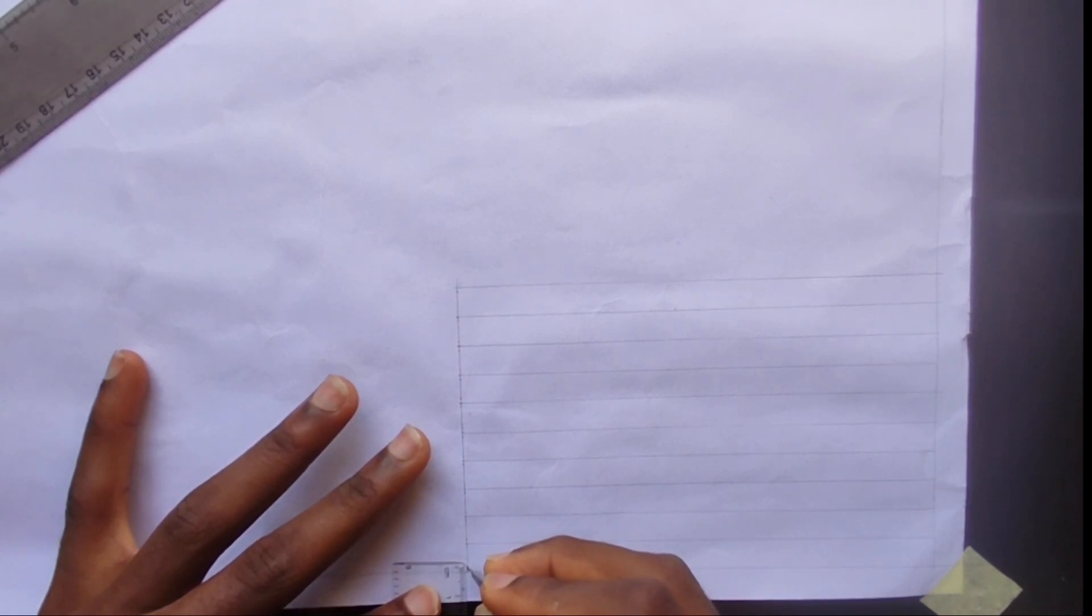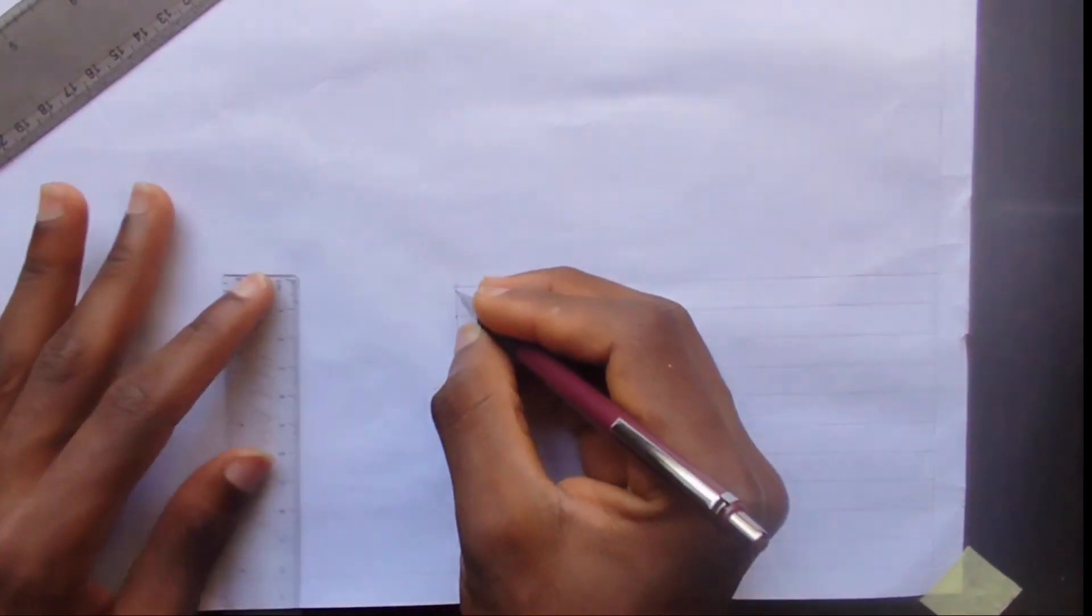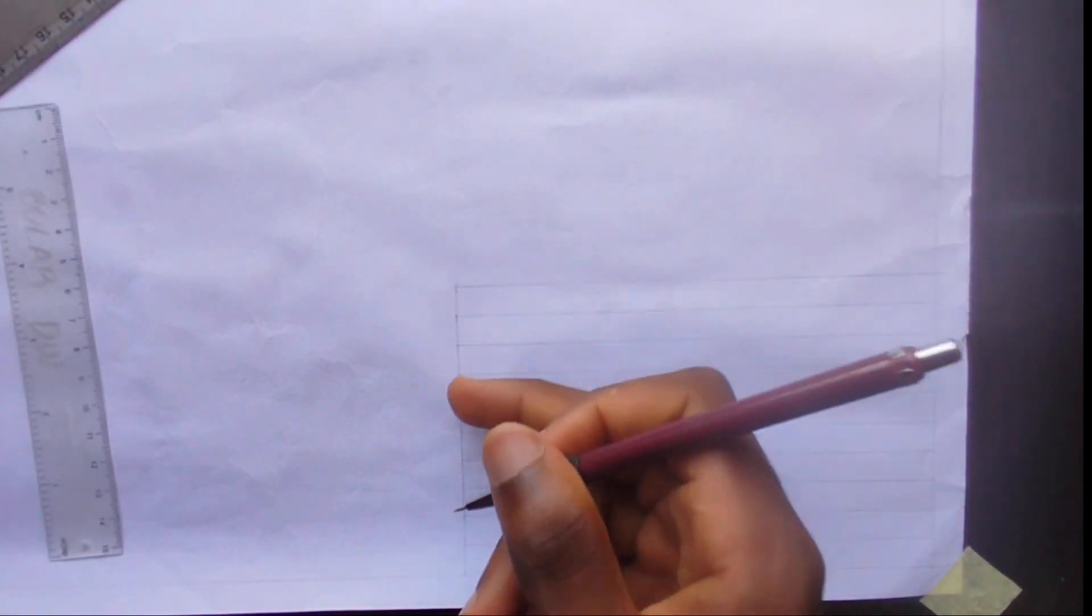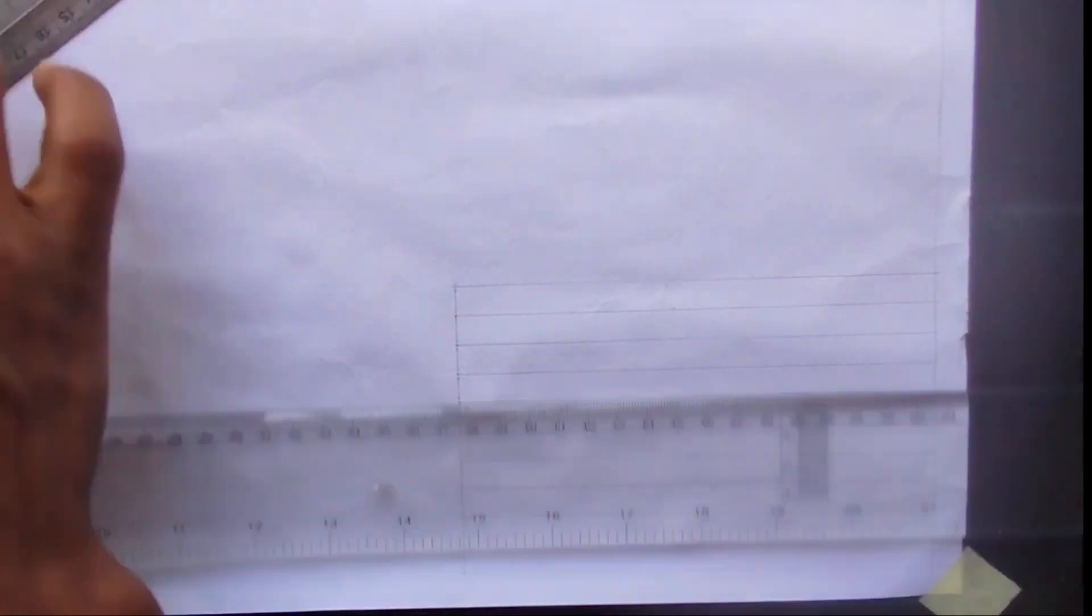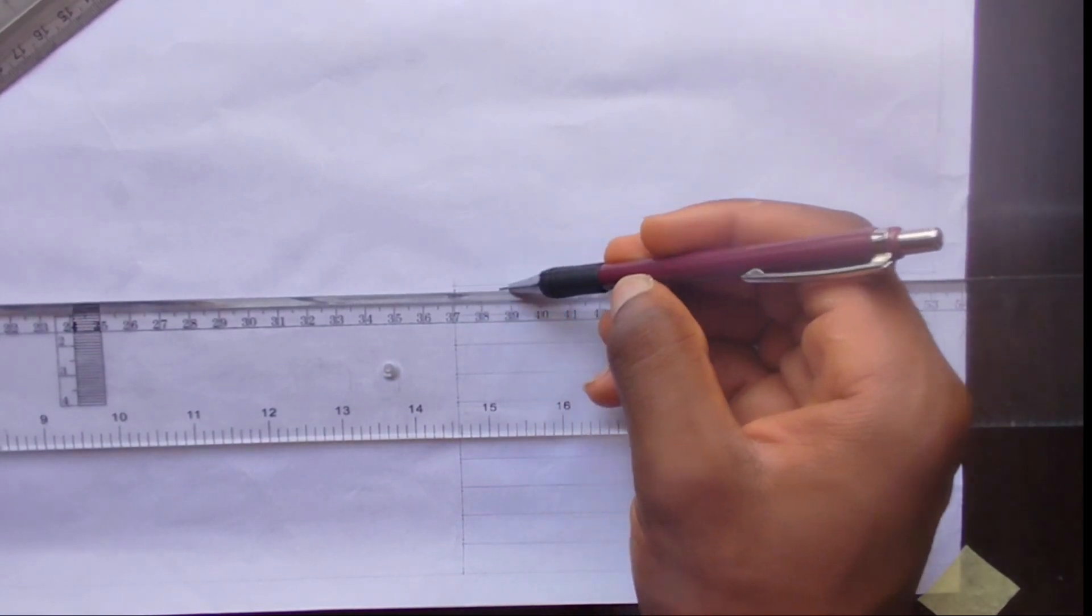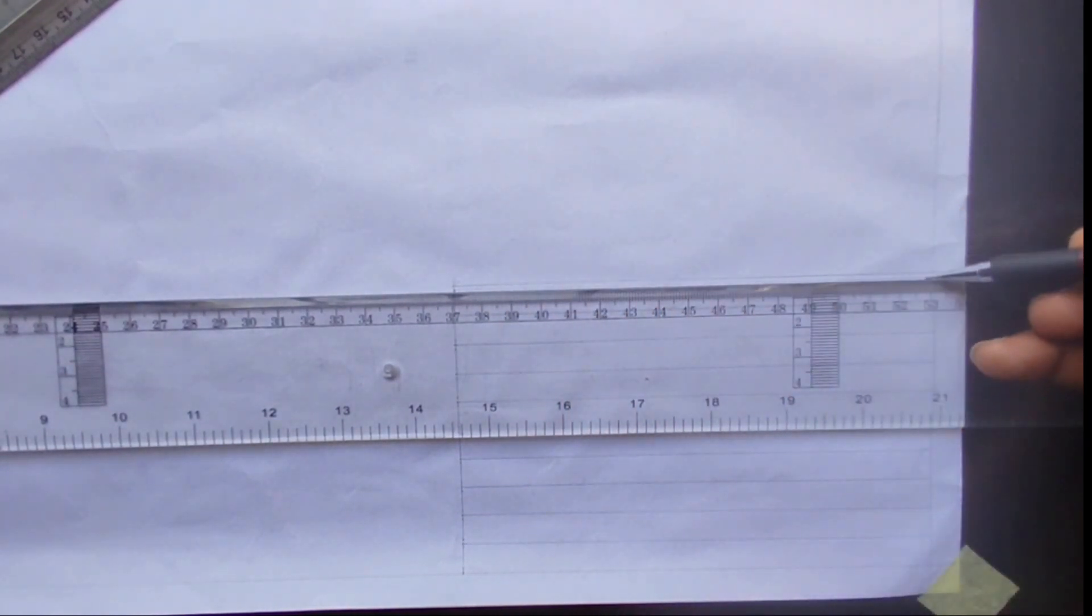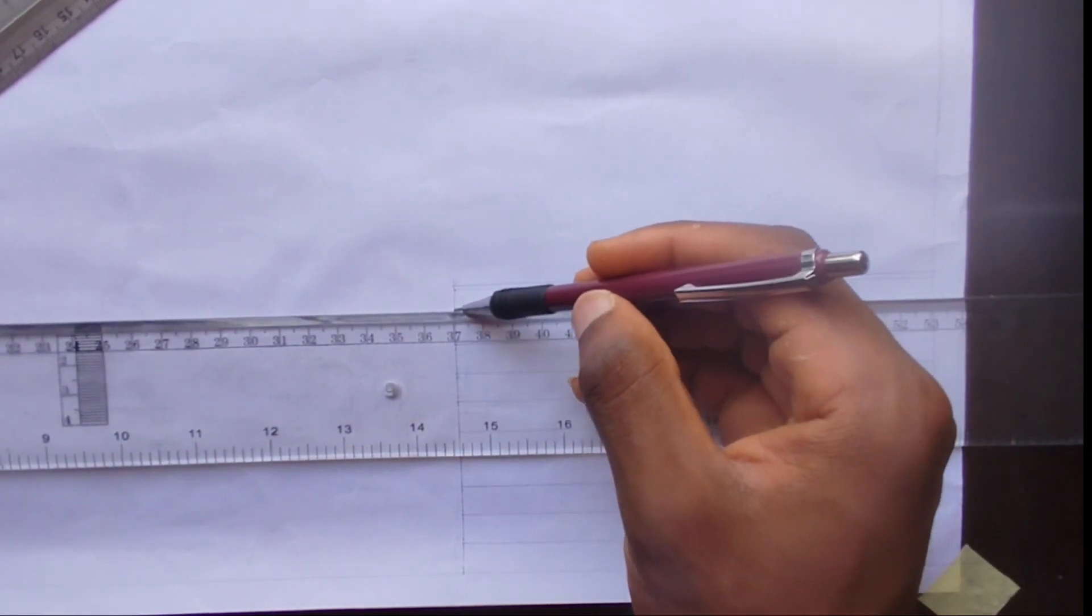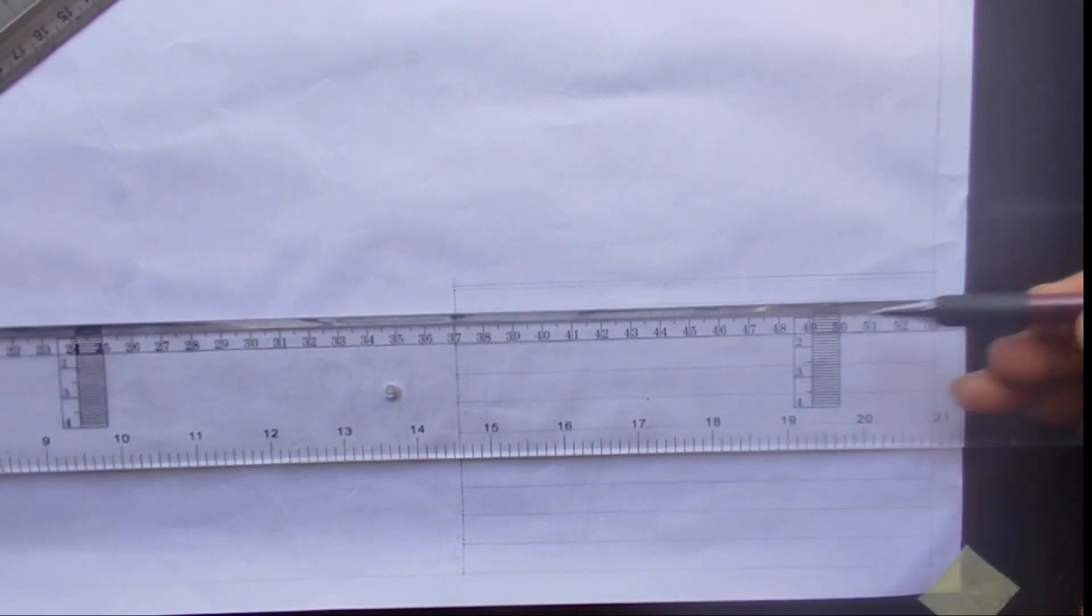So for this last edge, we are going to only be picking 1 point up and for here we are going to be picking 1 point down. But for these middle lines, we are going to be picking 1 point up and 1 point down. So we pick our T square. Using thin lines, we draw to the last edge like this.